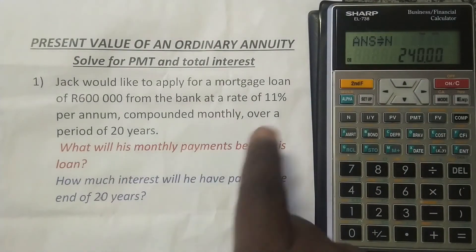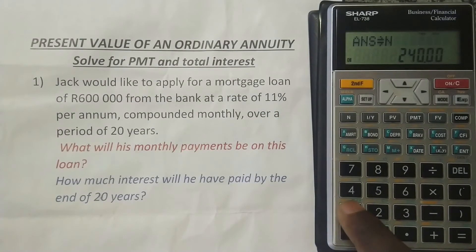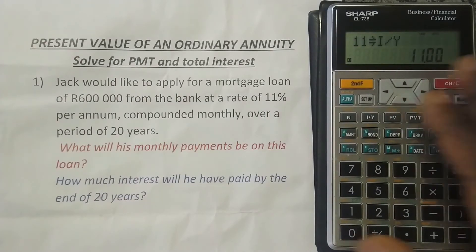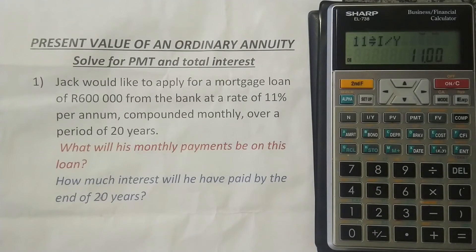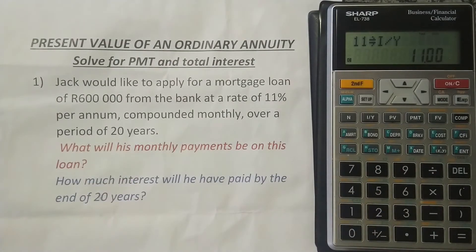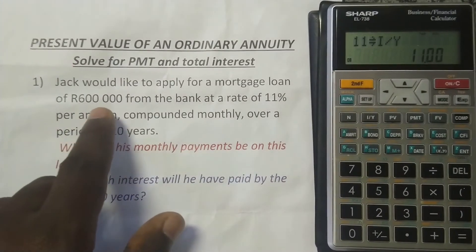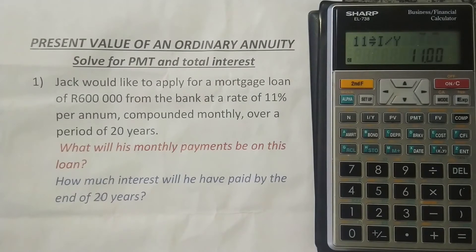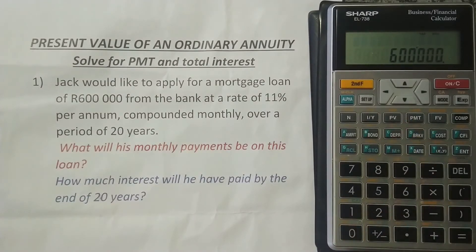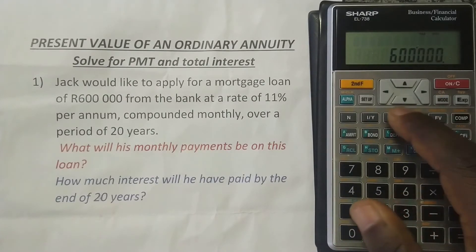The interest rate is 11%, so we just put 11 and press I/Y. Remember, we've already input into the calculator that it's compounded monthly, so the calculator knows — that's why we can just put the interest rate as it is. Next, the present value is 600,000 rand because that's how much mortgage loan Jack needs today — that's what he wants to apply for. So you put 600,000 and press PV, which stands for present value.